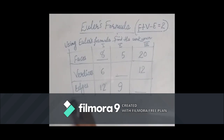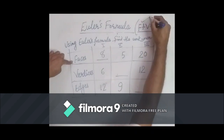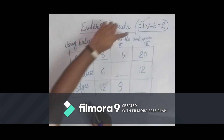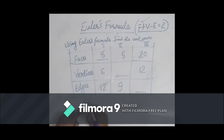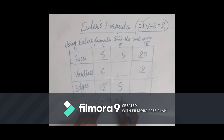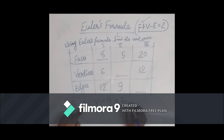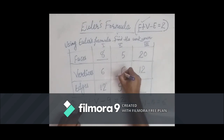In part number two, the number of faces is 5, vertices are unknown, and edges are 9. So 5 plus V minus 9 equals 2, giving V equals 2 plus 9 minus 5, which equals 11 minus 5, that is 6. So we enter 6 for the number of vertices.